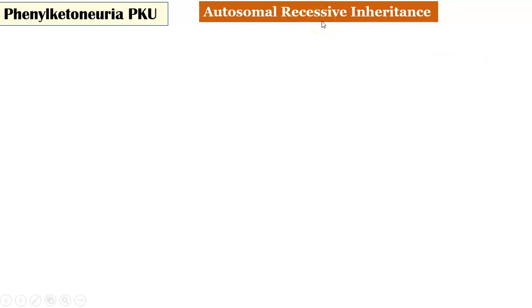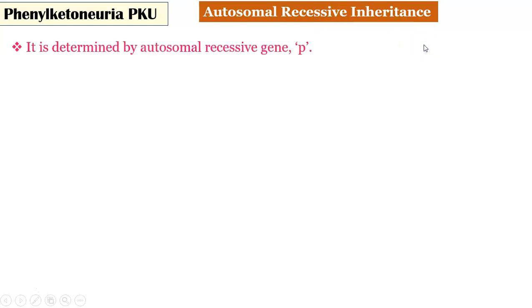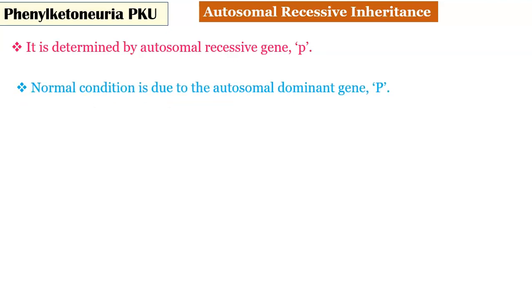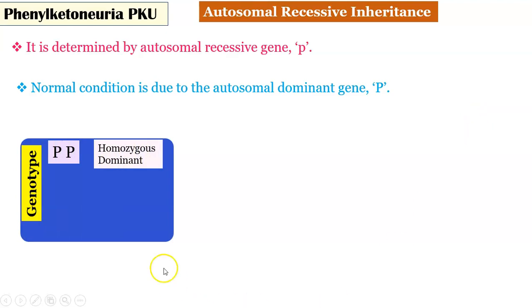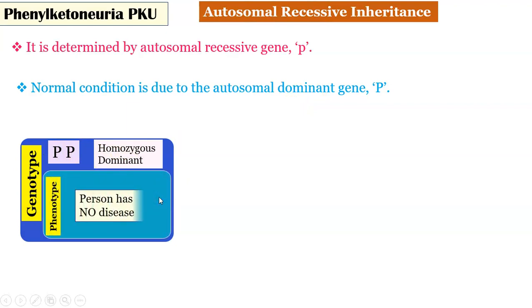Phenylketonuria, commonly called PKU, also shows autosomal inheritance but is controlled by a recessive gene. PKU is determined by the autosomal recessive gene, let us call it small p. The normal condition is due to the autosomal dominant gene, capital P. The possible genotypes: homozygous dominant capital P capital P means the phenotype will be no disease. Heterozygous dominant, one gene is capital P dominant and other is small p recessive; the gene responsible for disease gets suppressed and the person will not suffer from phenylketonuria.